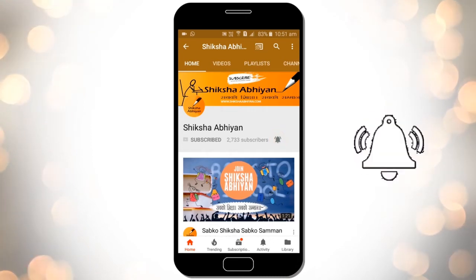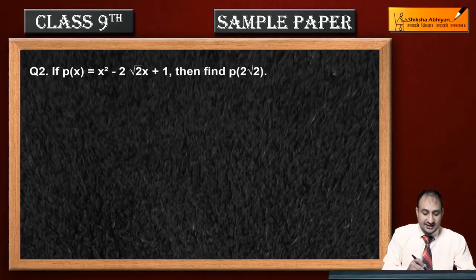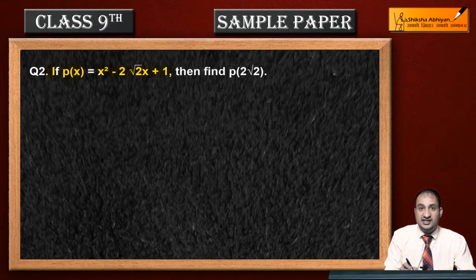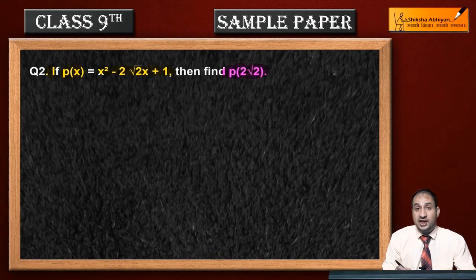Now question 2 is: if p(x) is equal to x square minus 2 root 2 x plus 1, this p(x) is a polynomial. You have to find p of 2 root 2 value. x की जगह अगर 2 root 2 put किया जाए तो value क्या होगी polynomial की, तो बिल्कुल हम इसे कर सकते हैं।